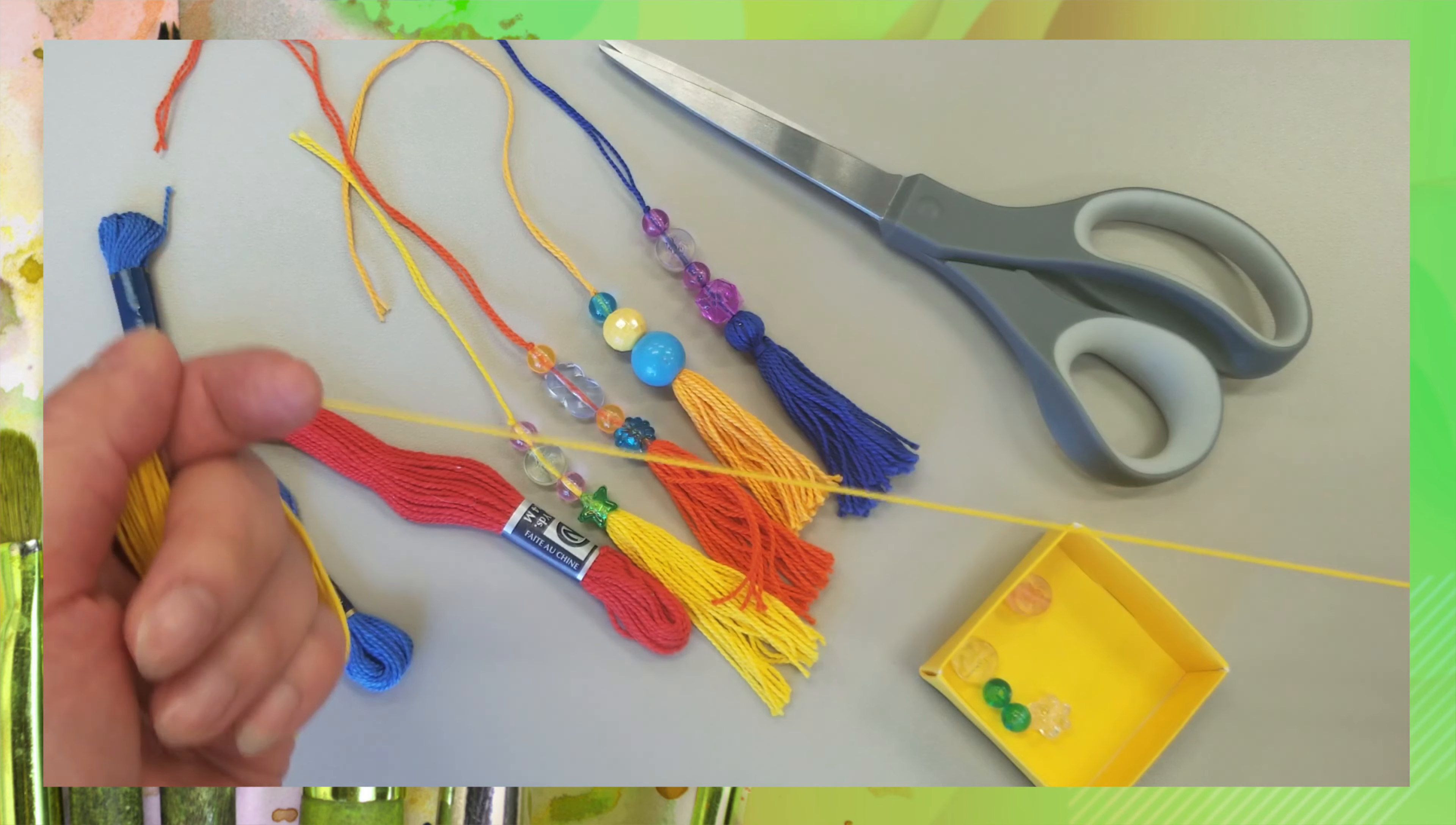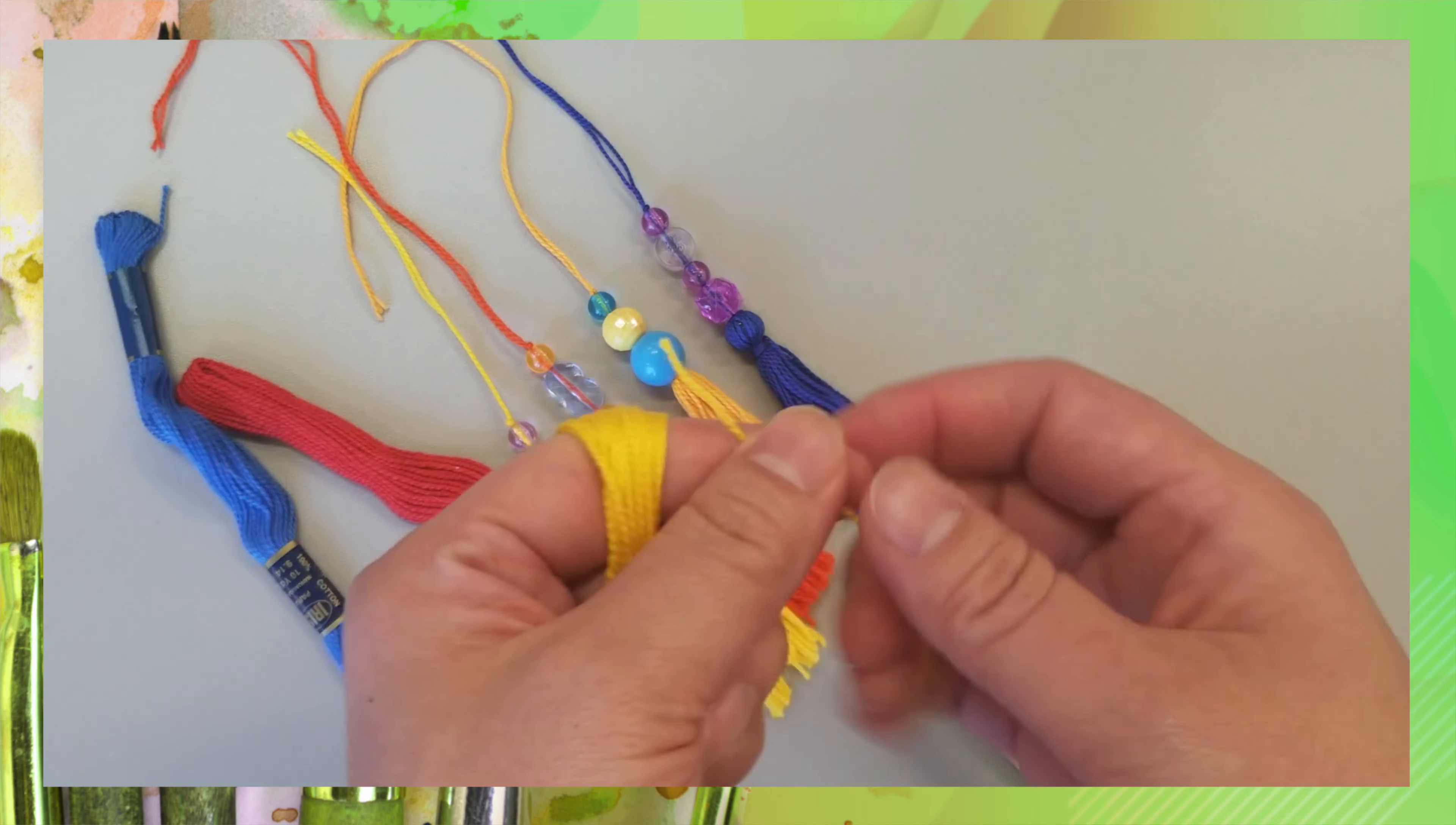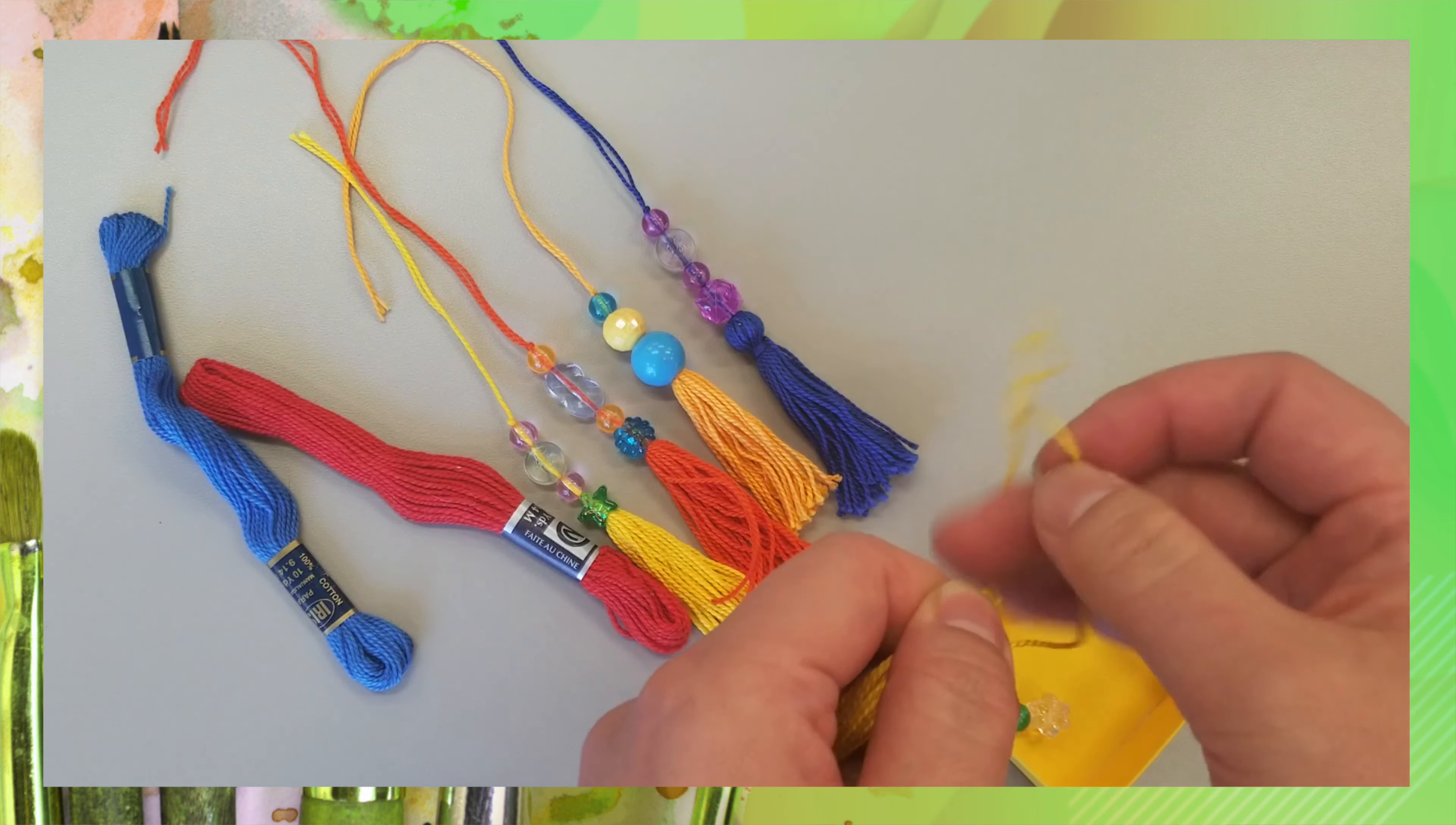And make sure you leave a little bit of extra. So we're going to cut it right here where we started. Now we're going to grab this extra piece of yarn, insert it into the loop that you have made. And right at the top, we're going to tie a knot.